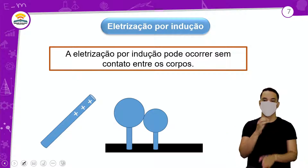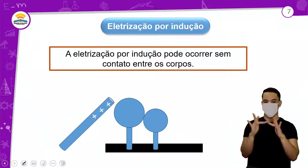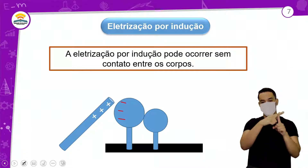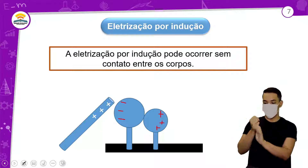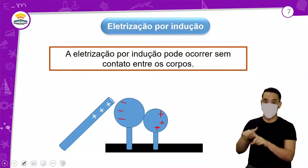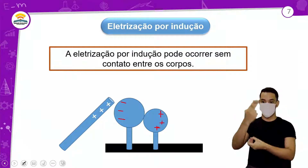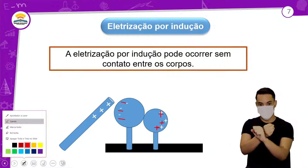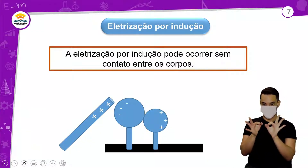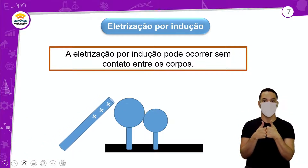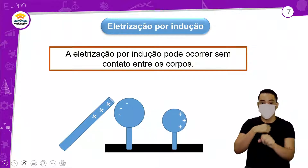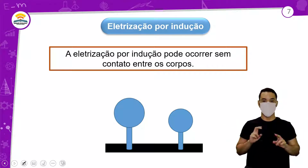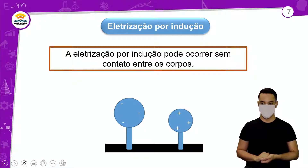A eletrização por indução pode ocorrer sem contato — ela não precisa tocar. Se eu aproximar uma barra positiva, ela vai puxar negativo e vai afastar o positivo. Sinais opostos se atraem, sinais iguais se repelem. Quando eu afasto a barra, permanece a carga nos corpos. Então, eu fiz uma eletrização por indução.